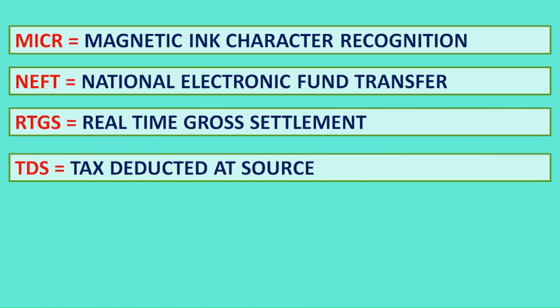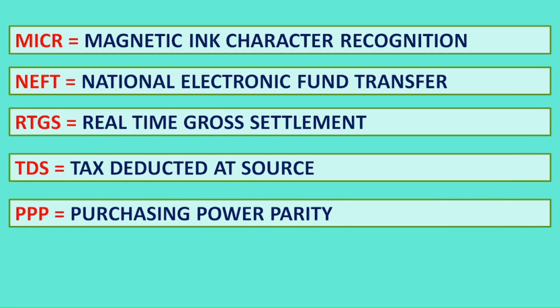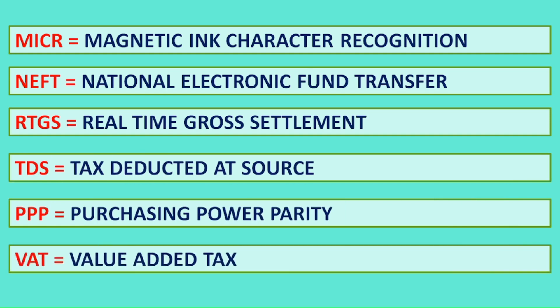TDS: Tax Deducted at Source. PPP: Purchasing Power Parity. VAT: Value Added Tax.